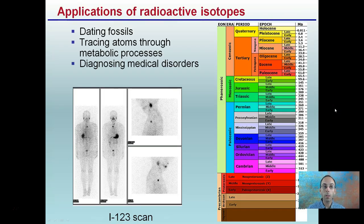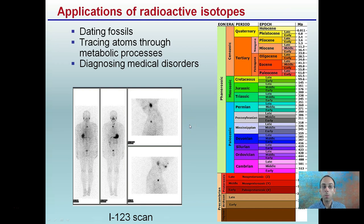The applications of radioactive isotopes include dating fossils, tracing atoms through metabolic processes, and diagnosing medical disorders. We're able to put isotopes in the body that aren't extremely radioactive or deadly, and trace and track where things go through the body. The body won't recognize it as an isotope — it treats it like a normal element — and that allows us to track and see through these radiograph scans. For example, iodine-123 can show where it accumulates in the body, which organs and tissues it concentrates in.